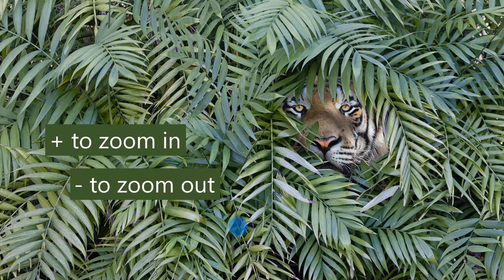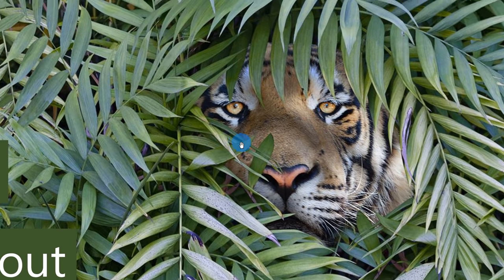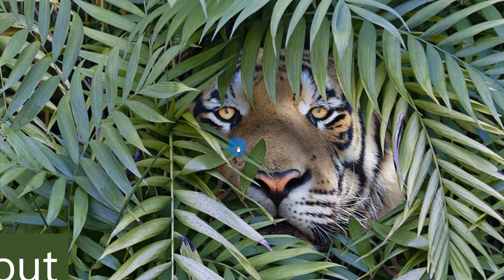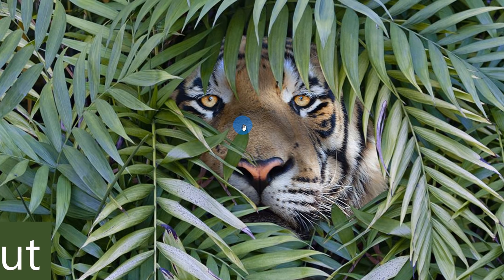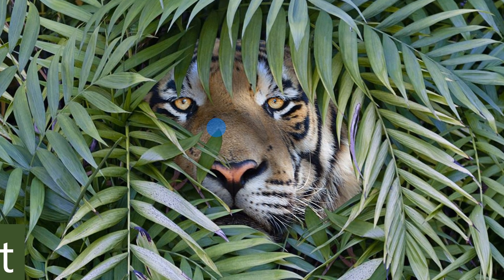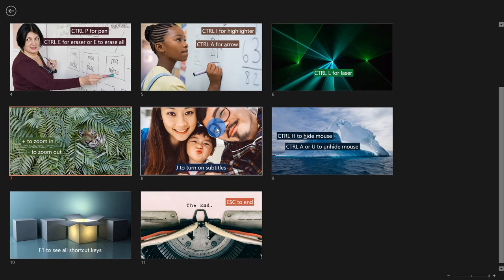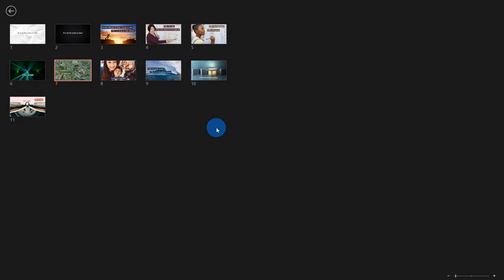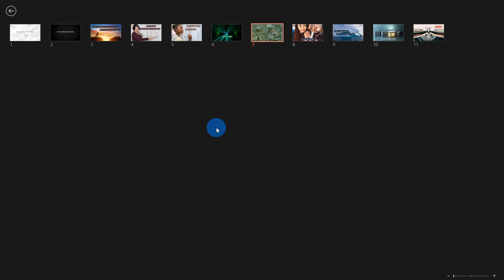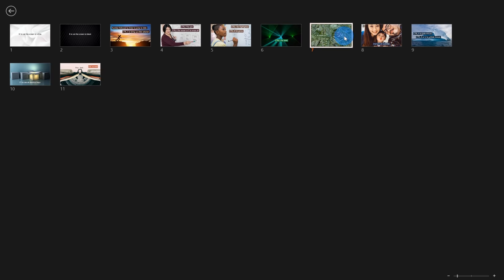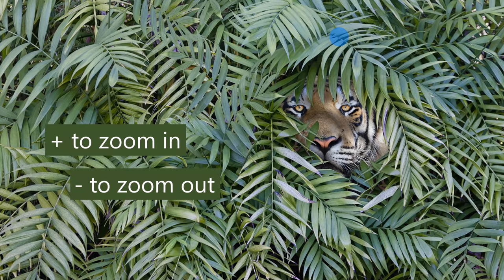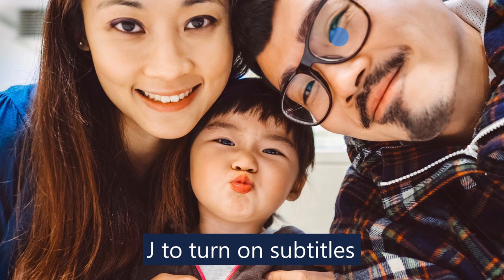One of my favorites — let's say you're showing a slide and you want to zoom in to help the audience find something. Press the plus key on your keyboard to zoom in, then use the mouse to pan around the zoomed image. Press the minus key to zoom back out to the original state. If you keep zooming out, it brings you to the slide sorter view where you can zoom out further and click any slide to navigate directly to it.